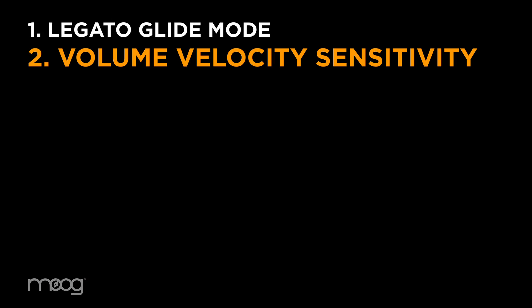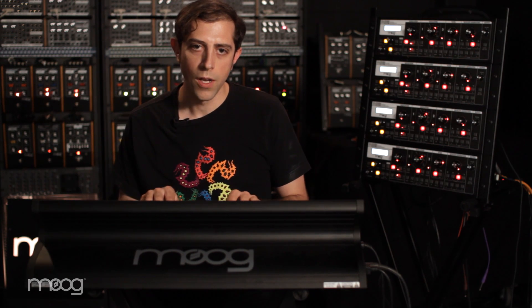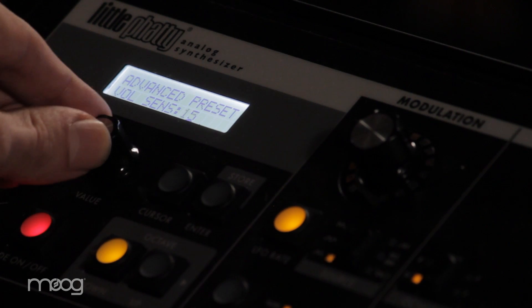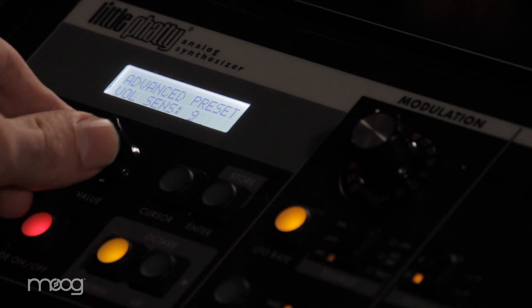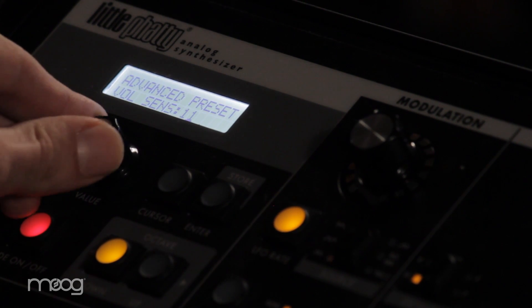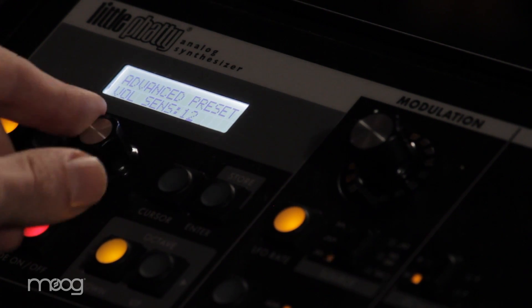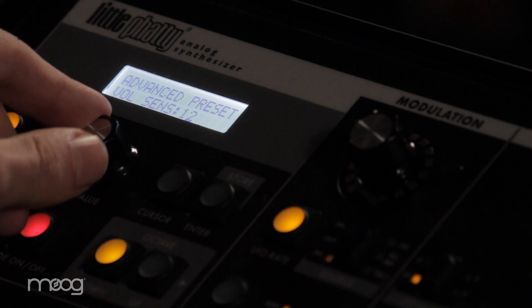The next new parameter on the Advanced Preset menu is Volume Velocity Sensitivity. With Volume Velocity Sensitivity, we've added 15 levels of sensitivity, mapping keyboard velocity to volume.